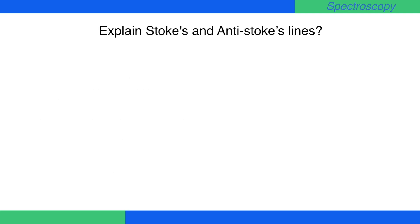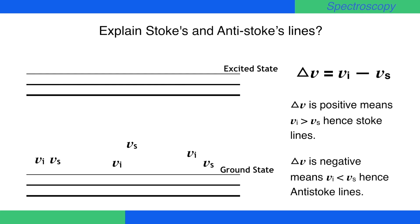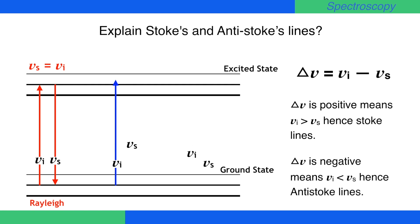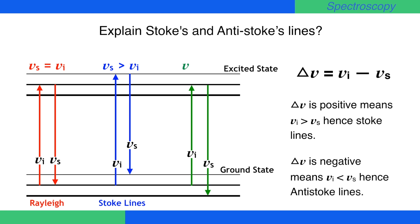Raman found that if nu-i is the incident frequency and nu-s is that of the scattered, then the Raman frequency or Raman shift is delta-nu, which equals nu-i minus nu-s. Delta-nu being positive means nu-i is greater than nu-s, hence Stokes lines are formed.